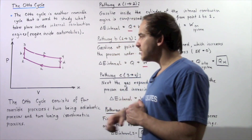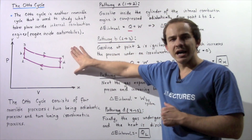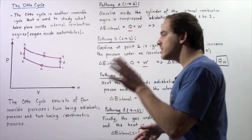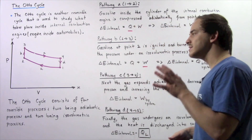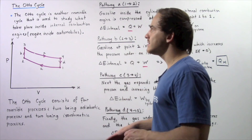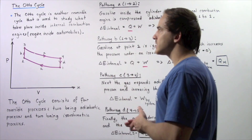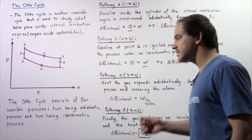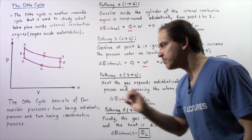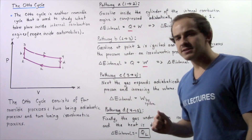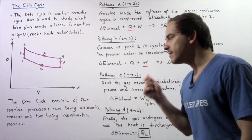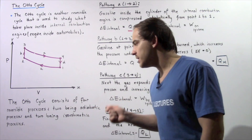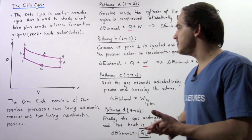Let's begin by looking at the following diagram. This diagram essentially depicts the four processes that take place inside the Otto cycle. Each Otto cycle consists of four reversible processes — two being adiabatic processes and two being isovolumetric processes.